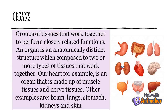Organs are groups of tissues that work together to perform closely related functions. An organ is an anatomically distinct structure composed of two or more types of tissues that work together. Our heart, for example, is an organ made up of muscle tissues and nerve tissues. Other examples are the brain, lungs, stomach, kidneys, and skin.